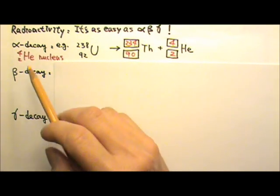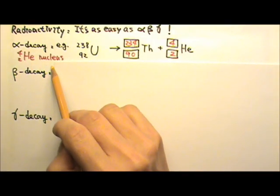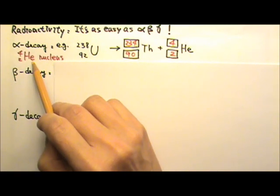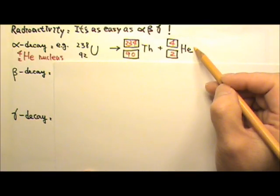By the way, because an alpha particle is a helium nucleus, not a helium atom, it does not have electrons, so it has a positive 2e of charge. However, we usually do not write positive 2 up here in these nuclear equations.